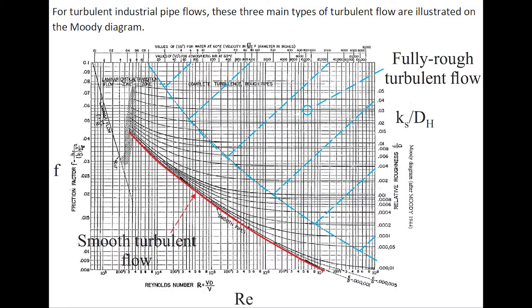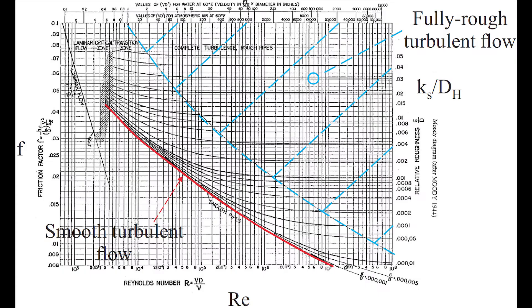For turbulent industrial pipe flow, the three main types of turbulent flow are illustrated on the Moody diagram.